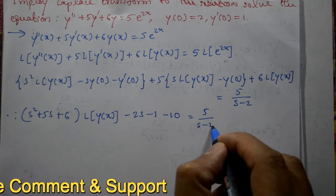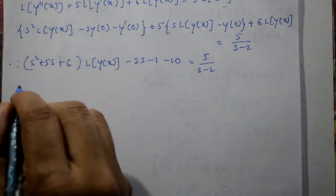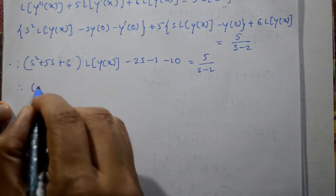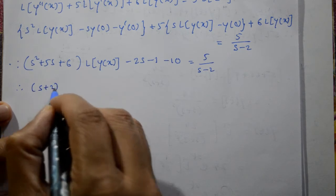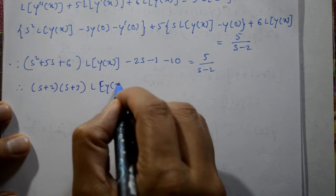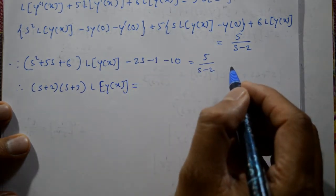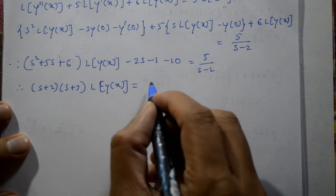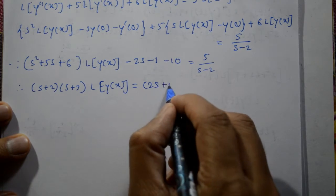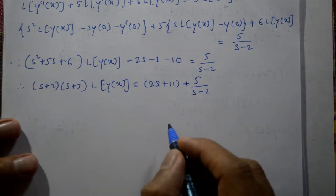Next step, now therefore factorization gives s plus 2 into s plus 3 into Laplace of y of x. And this is equal to, shifting right hand side terms, minus 2s shift to plus 2s, minus 11 becomes plus 11, plus 5 by s minus 2.